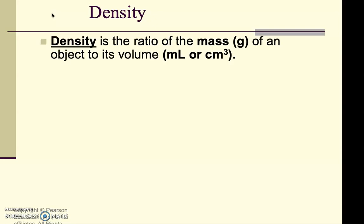Now what is density? Density is the ratio of the mass of an object to its volume. So it's going to be mass divided by volume. Mass will typically be in grams and your volume, depending upon whether it's a liquid or solid, will have the units mL or cm³ respectively.